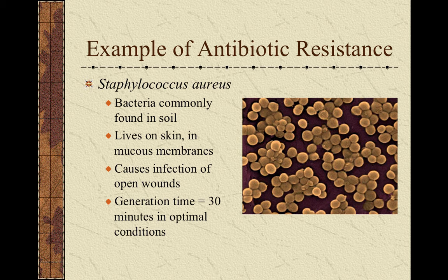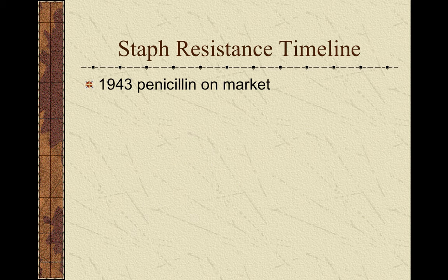One of the most famous examples of antibiotic resistance involves staphylococcus, commonly referred to as a staph infection. This is a very common bacterium normally in our environment, and in a healthy person it doesn't cause any problems. However, if a person has an injury or wound infected with staph bacteria, that can become very serious. Back in the day, many people died from bacterial infections. In the 1940s, when the first antibiotics — led by penicillin — came on the market, they were viewed as a miracle drug, because for the first time doctors could easily stop infections by giving a patient an antibiotic. Many many lives were saved, especially during World War II.